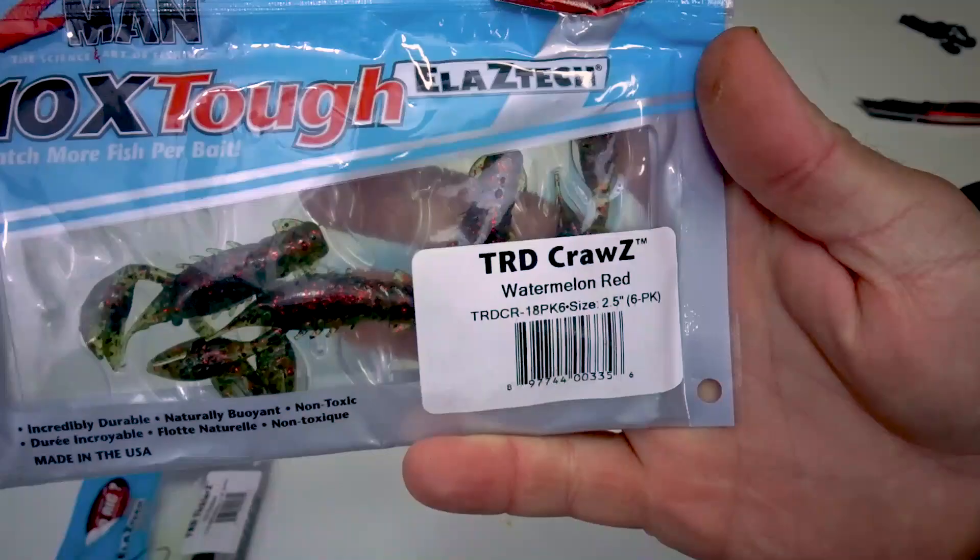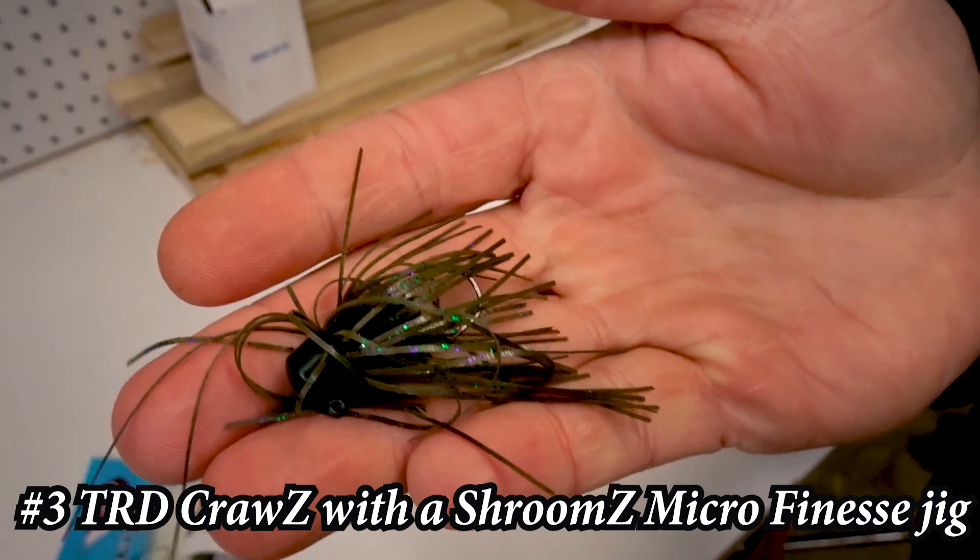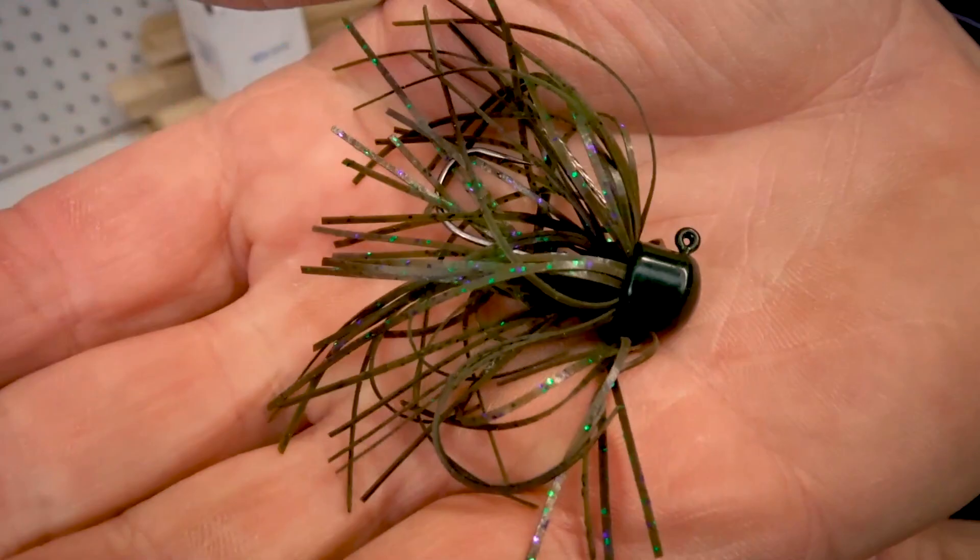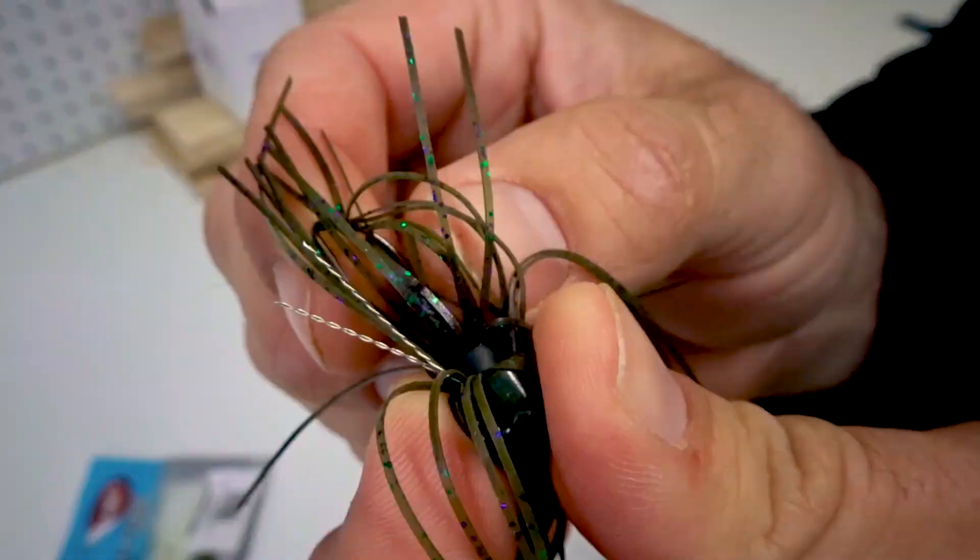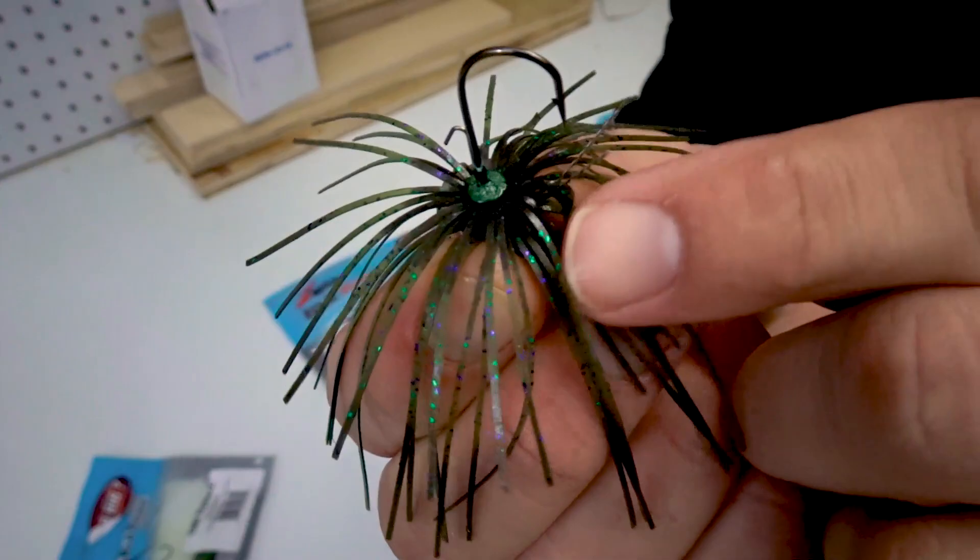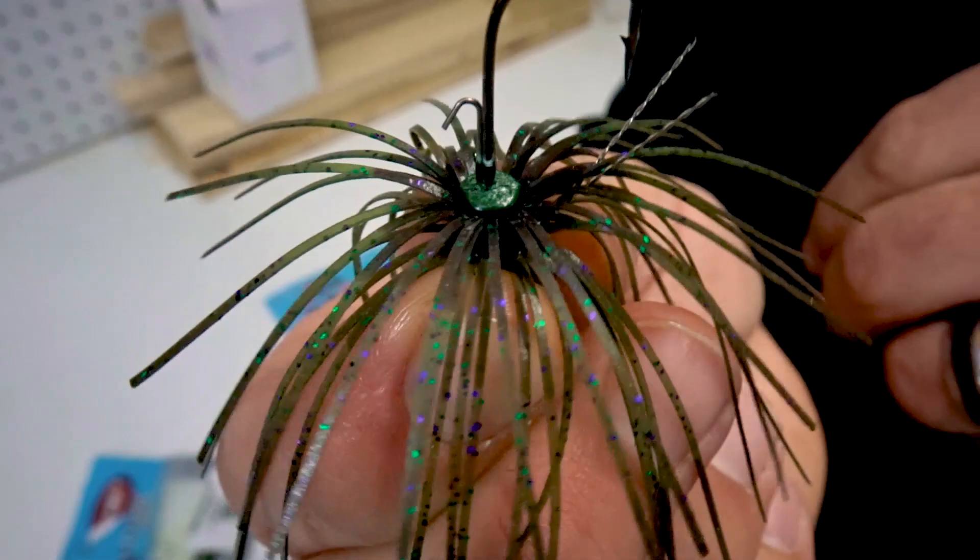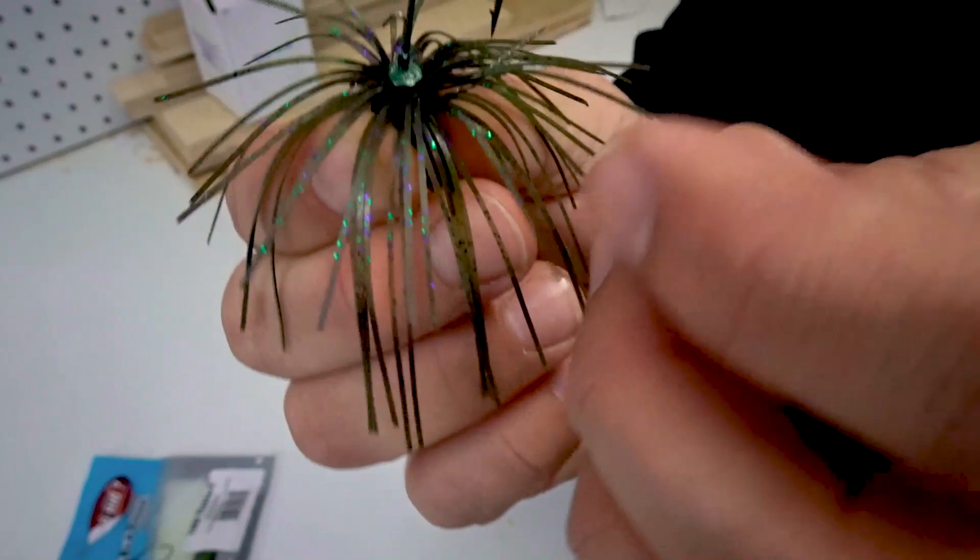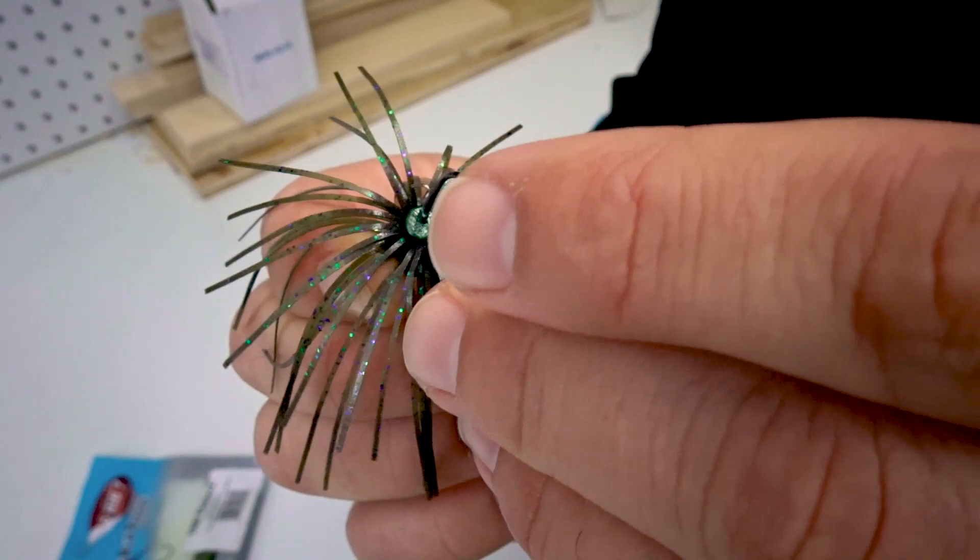Number three, TRD crawl Z with a shroom Z micro finesse jig. I love this thing. It's weedless, got the little weedless guard, it's got a little worm keeper there. It's a little hard to show this how I rigged this because of the skirt around this thing.